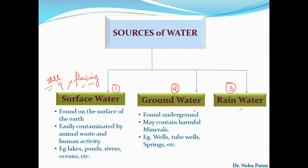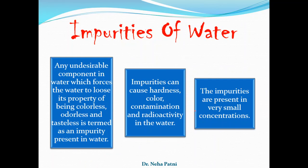In order to use water for further application, the first step is to identify its source. Once that is done, you need to identify what impurities could be present. An impurity is an undesirable compound present in the water that affects its main properties of being colorless, odorless, and tasteless. It might be present in a small or large amount, but then you have to treat it.